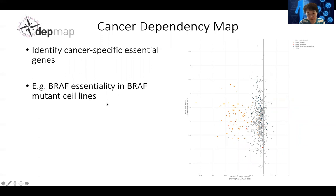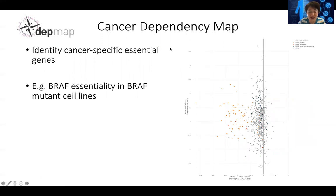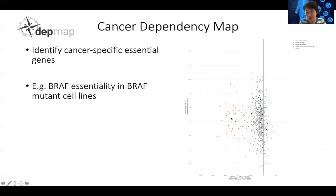Another example is BRAF. Looking across all cell lines, most of the time BRAF does not have a very strong phenotype — the CRISPR screen selection is close to zero — except that some cell lines are very negatively selected. Using the DepMap website, you can evaluate mutation levels, and it turns out those cell lines all carry the BRAF hotspot mutation. Those cells are now super dependent on the BRAF gene.